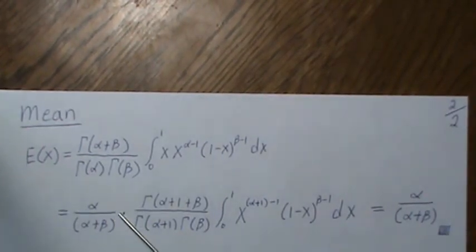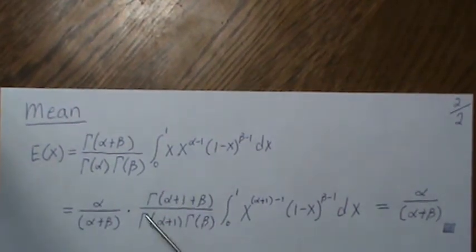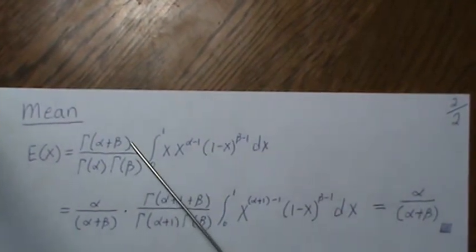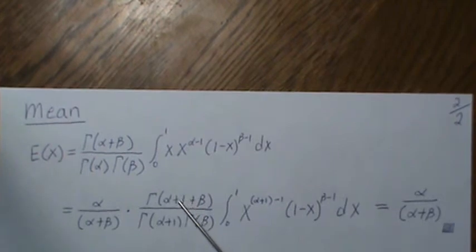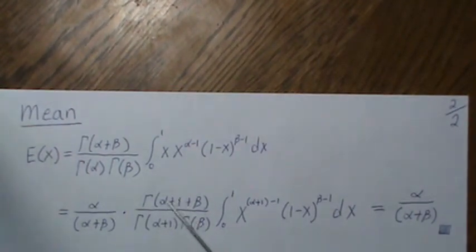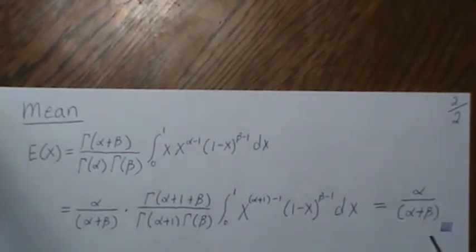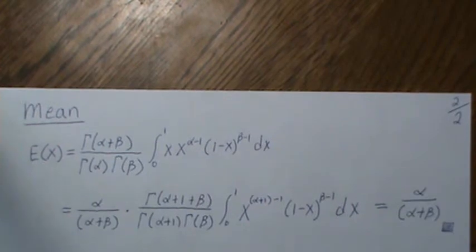To get this from here, we times it times alpha. That means we have to put an alpha here, so alpha divided by alpha is one. And the same way here, to get this numerator to be alpha plus one, we multiply it times alpha plus beta, which means we divide by it. Then since this goes to one, we're left with alpha over alpha plus beta.